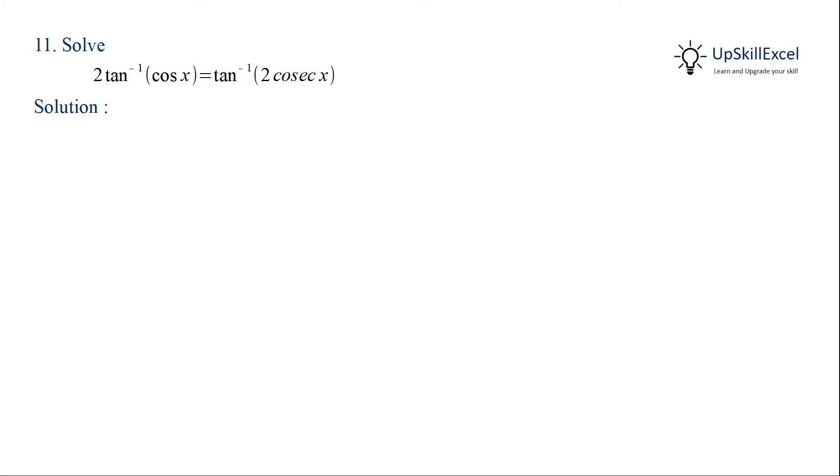Solve 2 tan inverse cos x is equal to tan inverse of 2 cos x x. We'll start by assuming that both left hand side and right hand side is equal to theta.